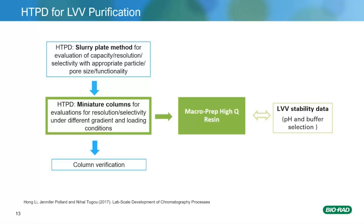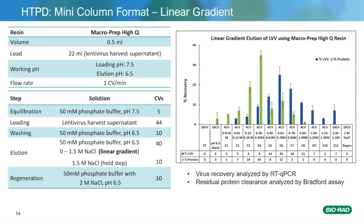To confirm what we observed from the batch screening method, we evaluated further the resolution and selectivity of MacroPrep HiQ resin in a dynamic setting. This was done using a mini-column format with established process conditions that provided high lentiviral recovery and good impurity clearance. A mini-column of 0.5 ml volume was used. A linear gradient from 0 to 1.5 molar sodium chloride was applied for eluting the lentivirus. Four column volume elution fractions were collected during the gradient and analyzed by RT-qPCR and Bradford assay. The resulting plot shows that protein impurities required a lower salt concentration for elution whereas the lentivirus required a relatively higher salt concentration, confirming that MacroPrep HiQ can be utilized for lentivirus purification.